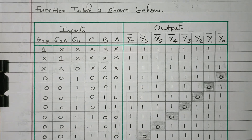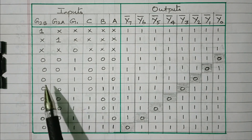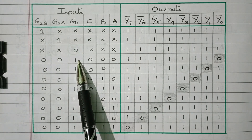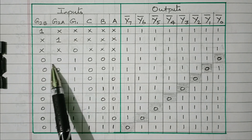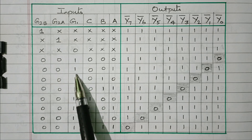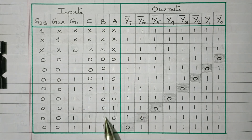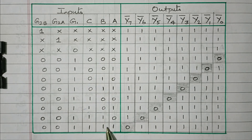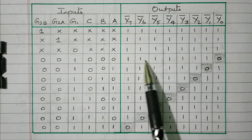Now we will see the other eight combinations. With inputs A, B, C we have eight different combinations. When G1=1, G2A=0, G2B=0, we get eight different outputs. A,B,C = 0,0,0 means Y0 bar is 0 and all other outputs are 1. A,B,C = 0,0,1 means Y1 bar is 0, other digits are 1. A,B,C = 0,1,0 means Y2 bar is 0, other digits are 1. A,B,C = 0,1,1 means Y3 bar is 0, other digits are 1. That is inverted — normally only Y0 would be 1, but because of inverted output Y0 bar is 0 and all others are 1.